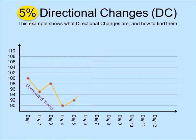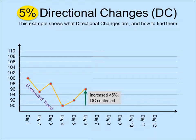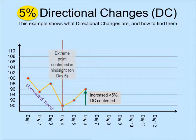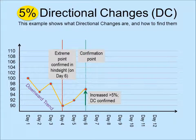Suppose the price goes up to 96 on day 6. Since 96 is more than 5% above 90, we conclude that a directional change has occurred. Now, in hindsight, we conclude that the price of 90 on day 4 was an extreme point. We also confirm on day 6 in hindsight that the downward trend ended on day 4, and an upward trend started from there.